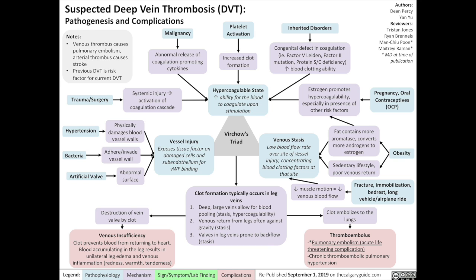Two main factors can cause venous stasis. One is obesity — a sedentary lifestyle will lead to poor venous return, resulting in a lower rate of blood flow through the veins. In addition, fatty tissues contain more aromatase, which converts more androgens to estrogen, resulting in a more hypercoagulable state.